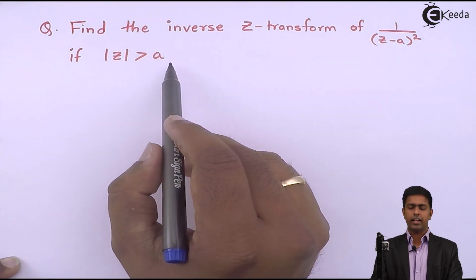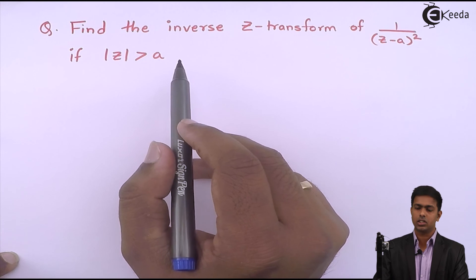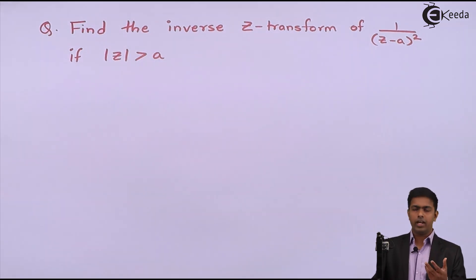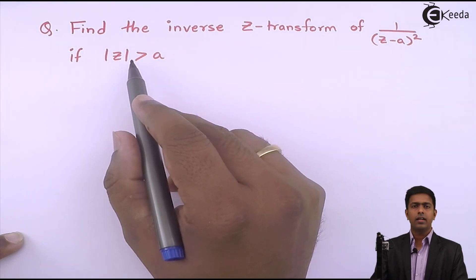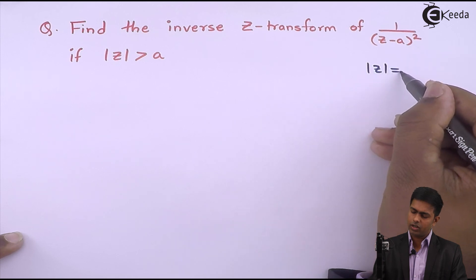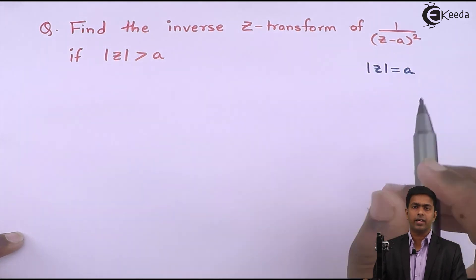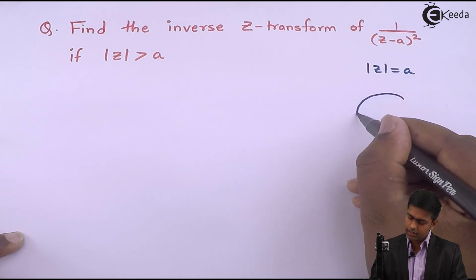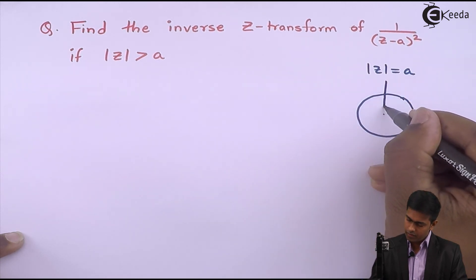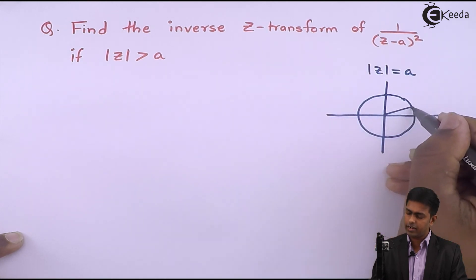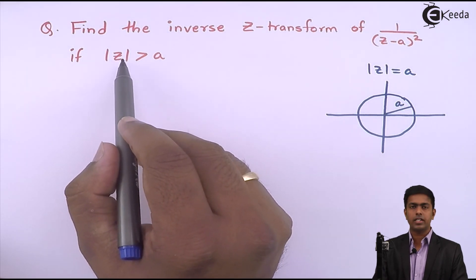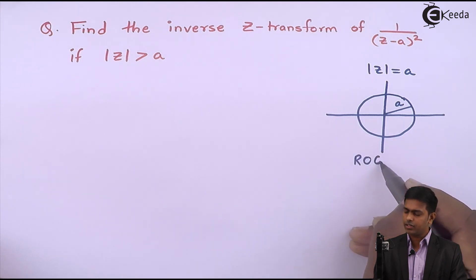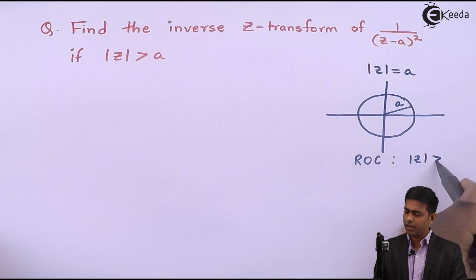Now, what is this mod Z greater than A? This is nothing but the region of convergence — the region where our Z transform exists or is convergent. Let us draw this region of convergence first. Mod Z equal to A is a circle with center at origin and radius equal to A. The region of convergence is mod Z greater than A.